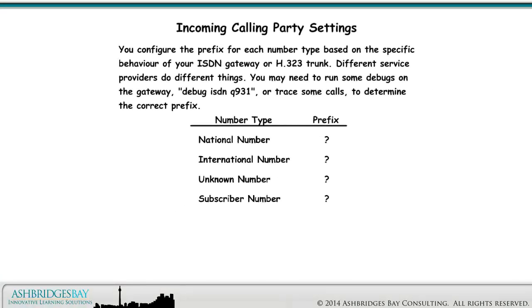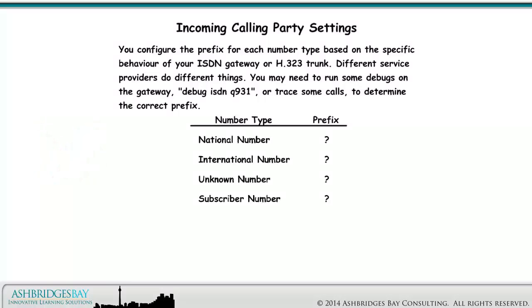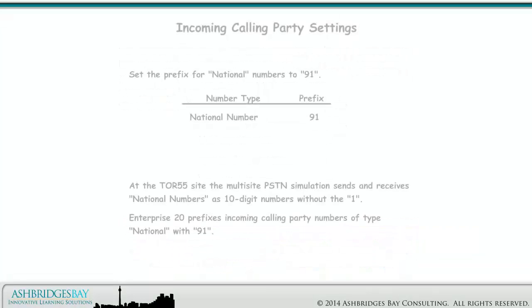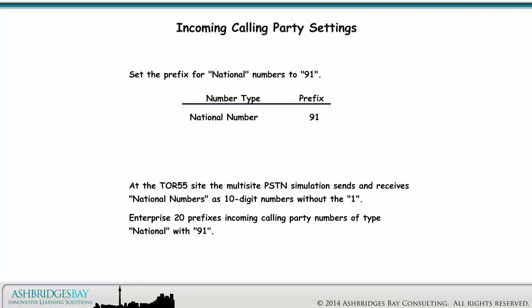You configure the prefix for each number type based on the specific behavior of your ISDN gateway or H.323 trunk. Different service providers do different things. You may need to run some debugs on the gateway — debug ISDN Q931 — or trace some calls to determine the correct prefix. The multi-site PSTN simulation uses type of number for the Toronto 55 site H.323 trunk. We programmed it to illustrate general configuration of incoming calling party settings, not to match the specific behavior of ISDN trunks in Toronto. Set the prefix for national numbers to 91.